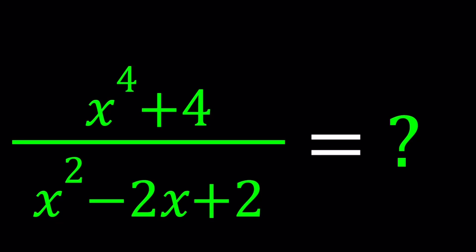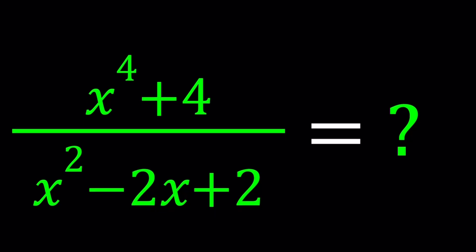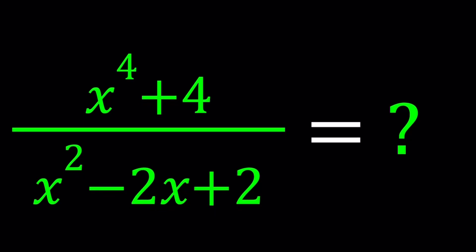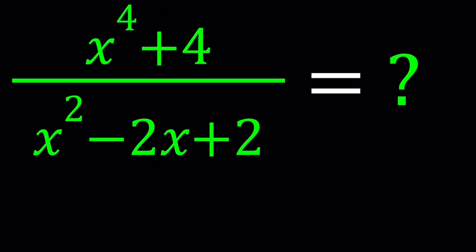Hello everyone. In this video we're going to be simplifying a rational expression: x to the fourth power plus 4 divided by x squared minus 2x plus 2. I might have done this problem before — I can't remember. If you know the link you can share it. I'm going to use a different method as my first method, and I'll be presenting a total of three methods.